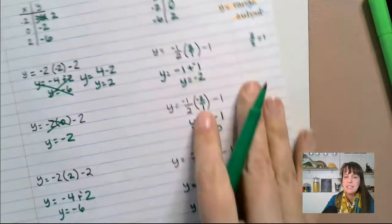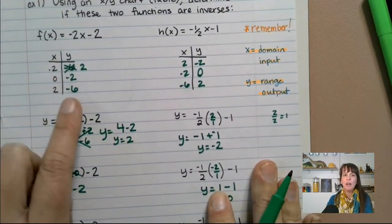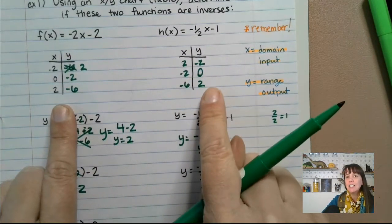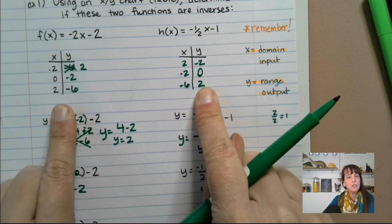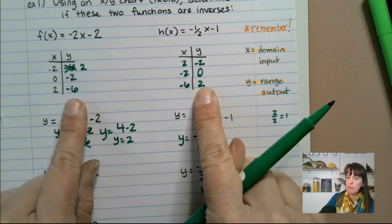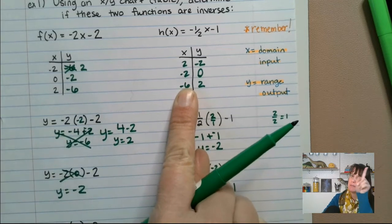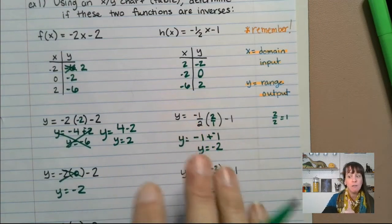Put that back in over here and take a look at that. If you look at our f of x, the domain of our f of x is the range of our h of x and the range of our f of x is the domain of here. So this means that they are in fact inverses.